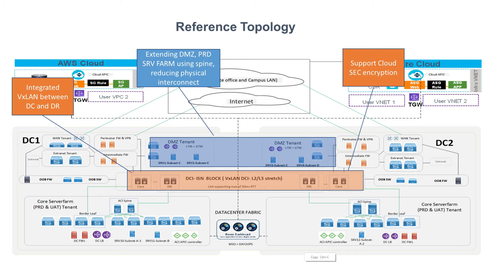Another aspect to consider: think about your data center having different blocks — DMZ, production, server farm, all of those. Extension of these blocks to a different site usually requires connecting those different blocks using a physical interface to your DCI switches, or manually extending L2 and L3 from these blocks to those DCI switches. Here, with this solution, you can easily extend those required segments logically using your ACI policy construct.